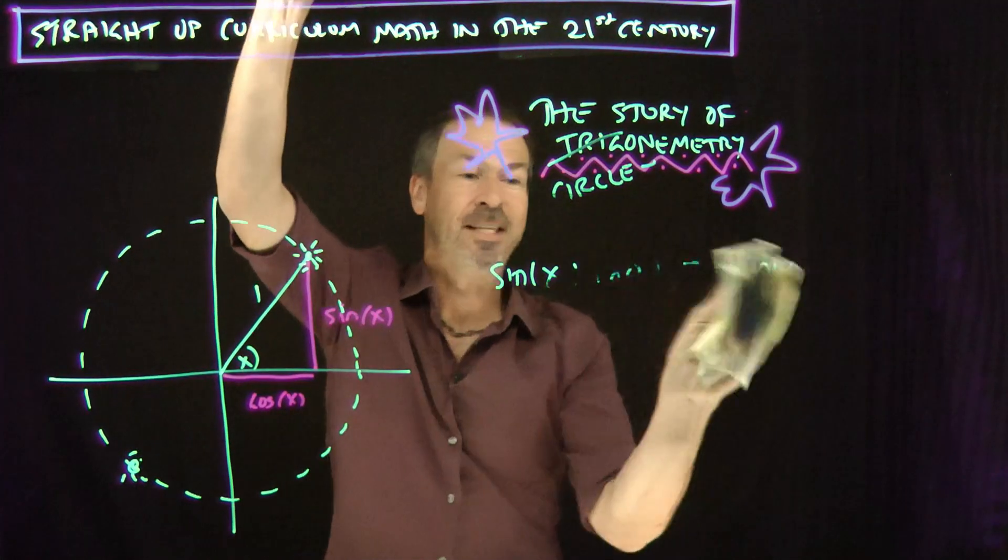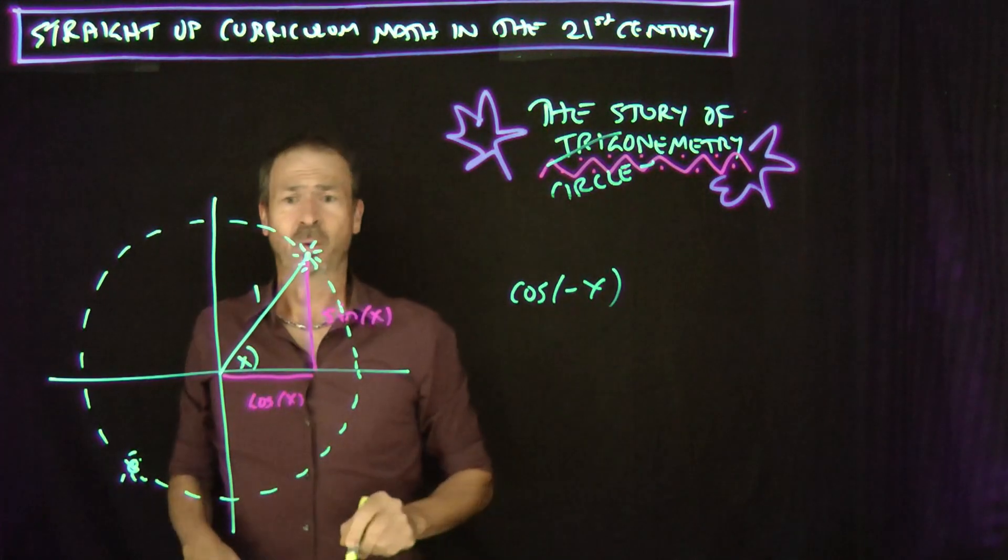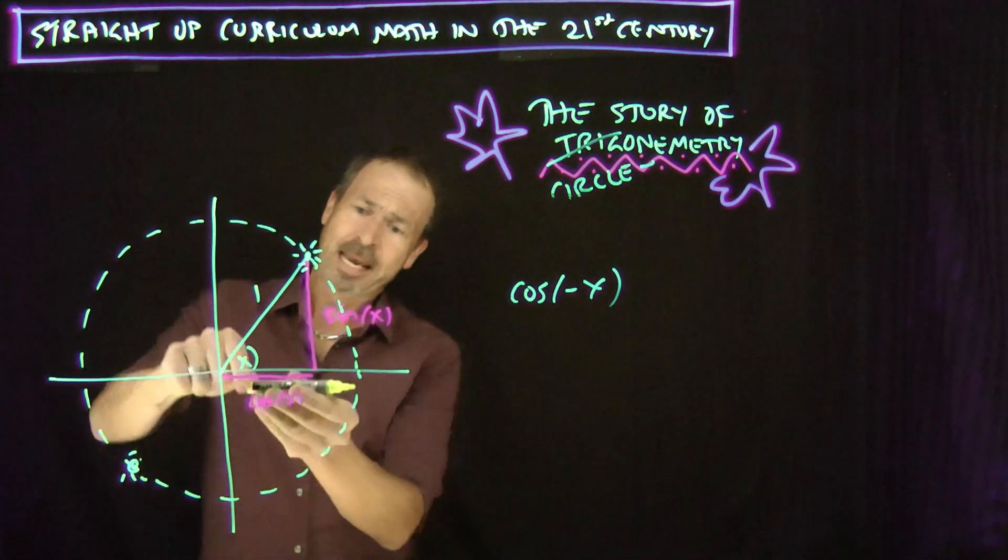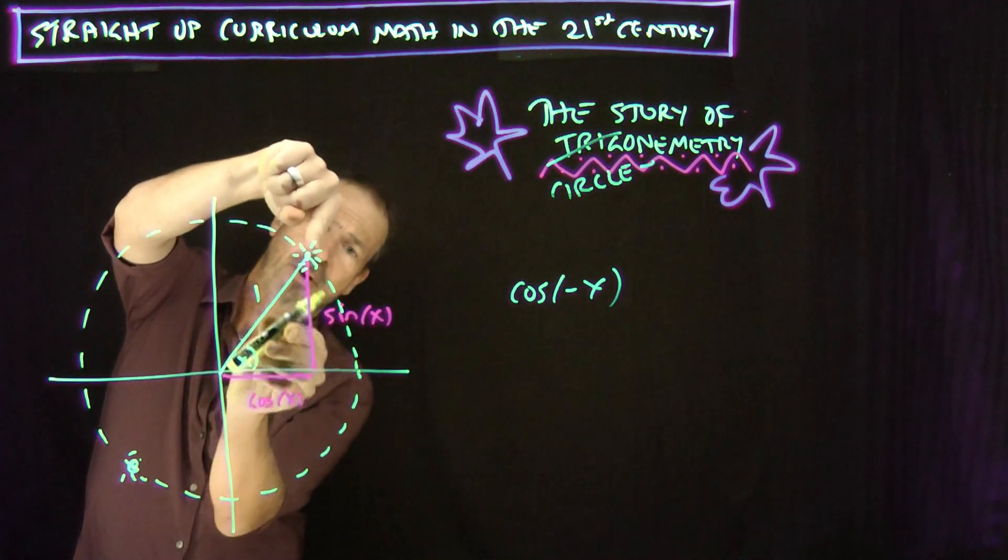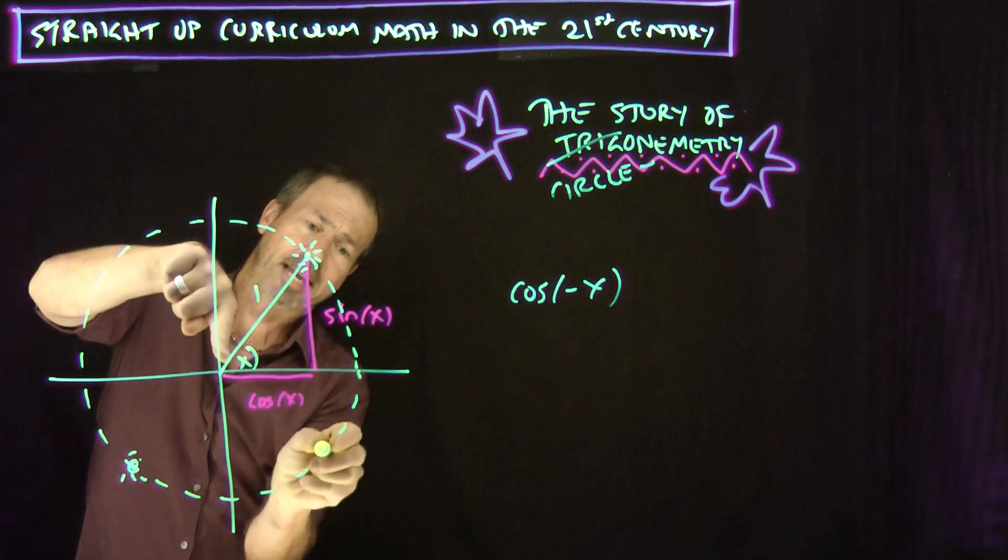Here's another one. Let's try this one. What about cosine of negative X? Oh, cosine of negative X. That's weird. I want a negative angle this time. So here's the angle X. So it's X degrees in the positive direction. So now I want X degrees in the negative direction. Where would the Sun be? I guess it'd be down here.